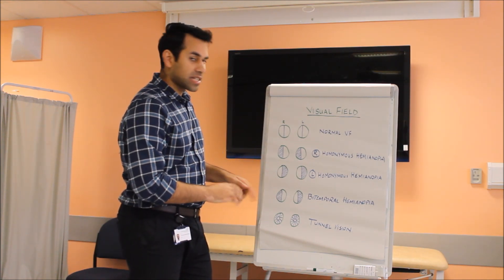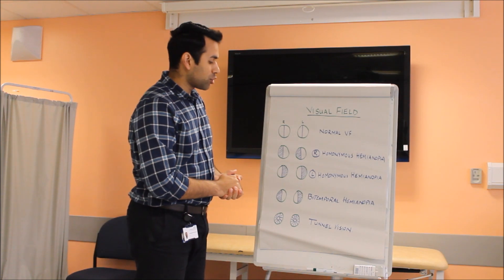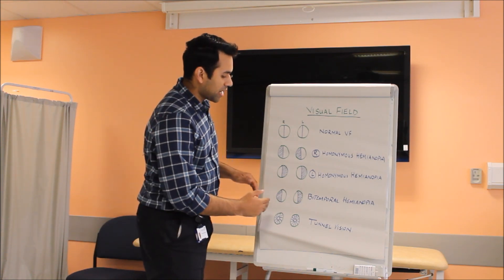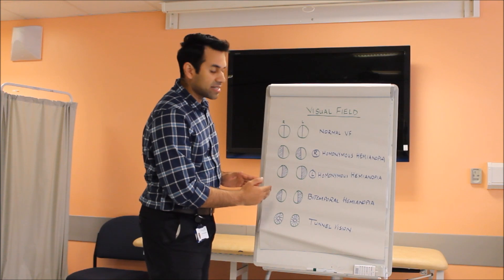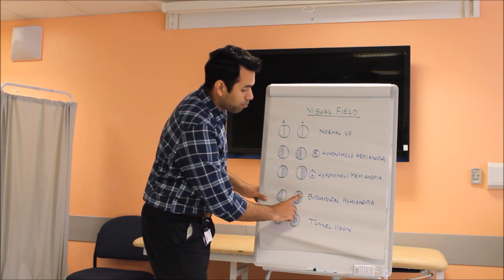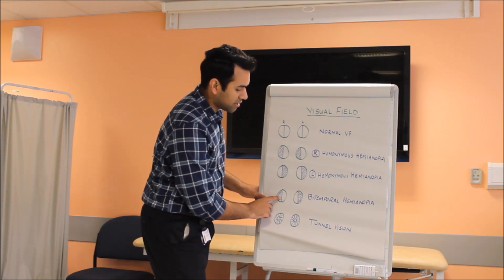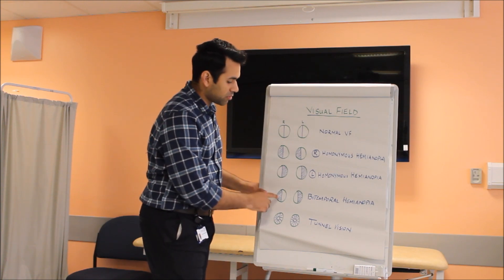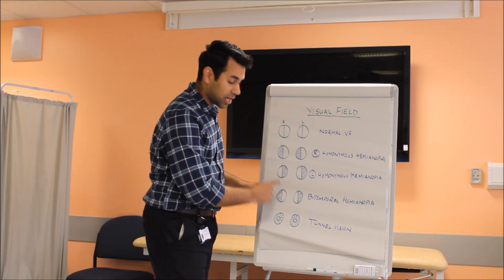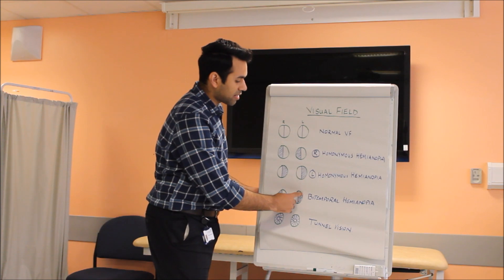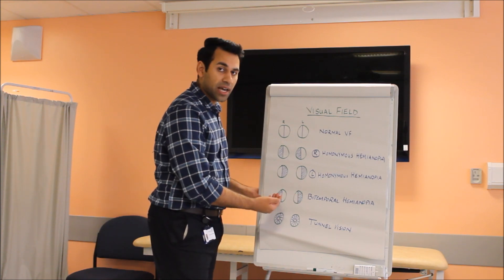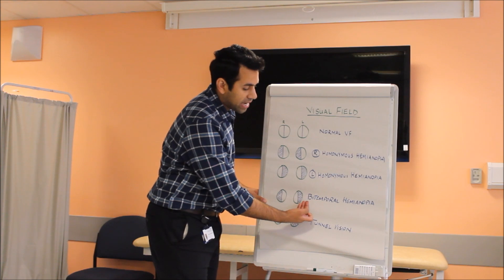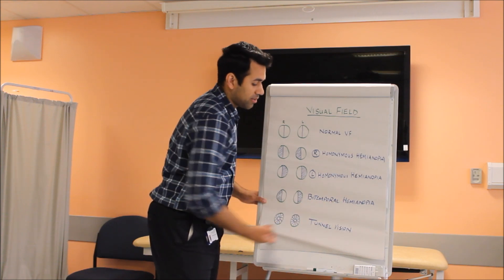The fourth diagram shows bi-temporal hemianopia, which is basically a defect in both temporal sides of both eyes. The temporal side of the right eye and the temporal side of the left eye will be defective, hence known as bi-temporal hemianopia.